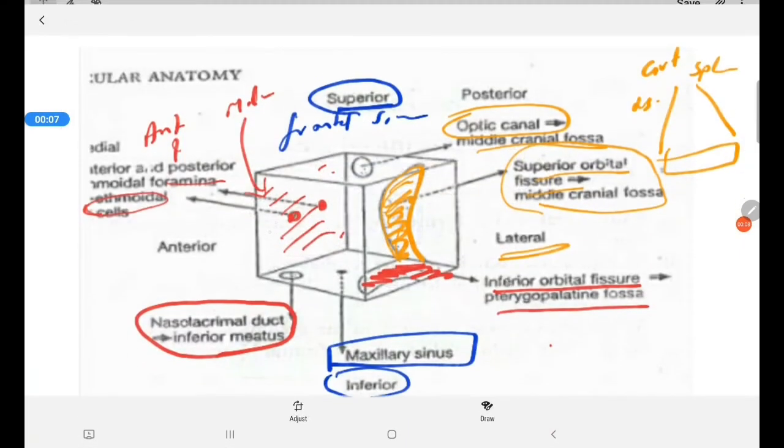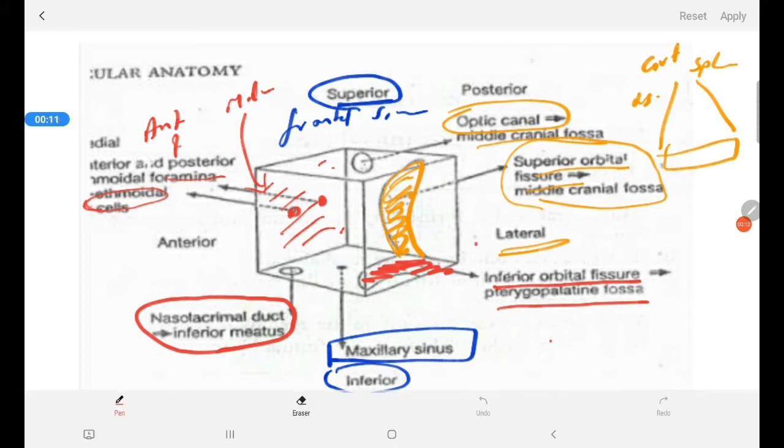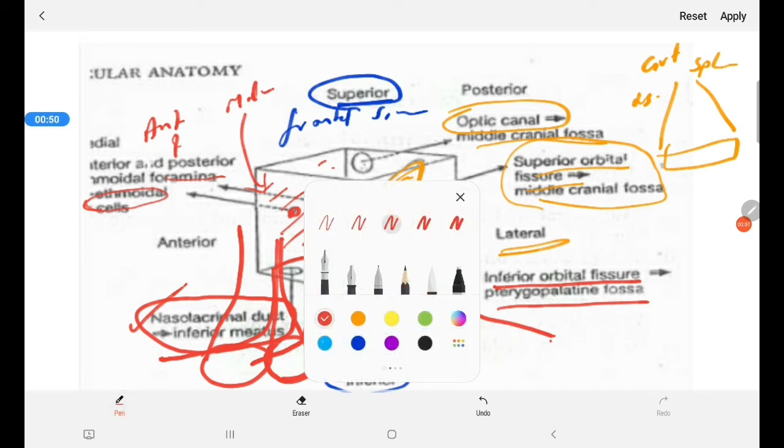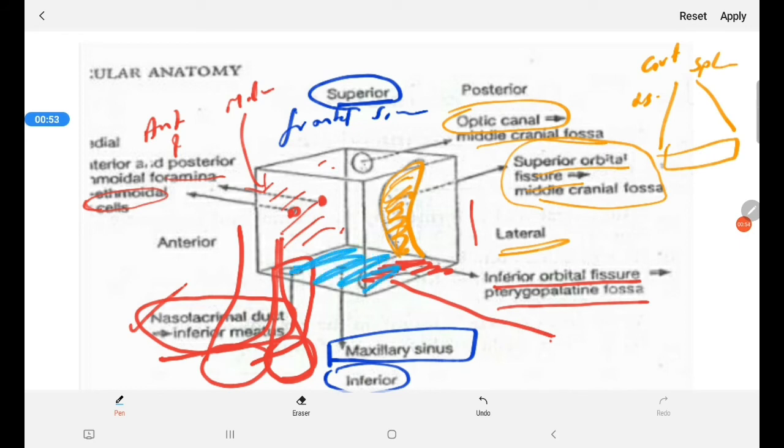It is the nasolacrimal duct that, it is the inferior wall opening that connects the orbit to the nose. It is connecting the nasolacrimal duct to the inferior meatus through the inferior wall of the orbit. And when you have a fracture, a fracture involving the floor of the orbit, all the contents from the orbit can herniate into the maxillary sinus.